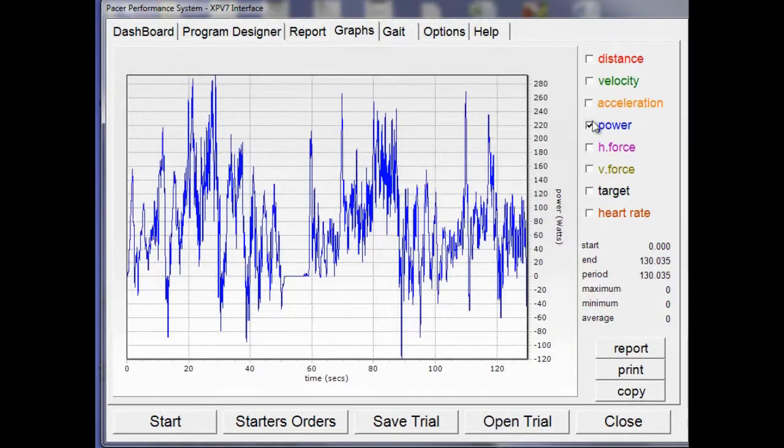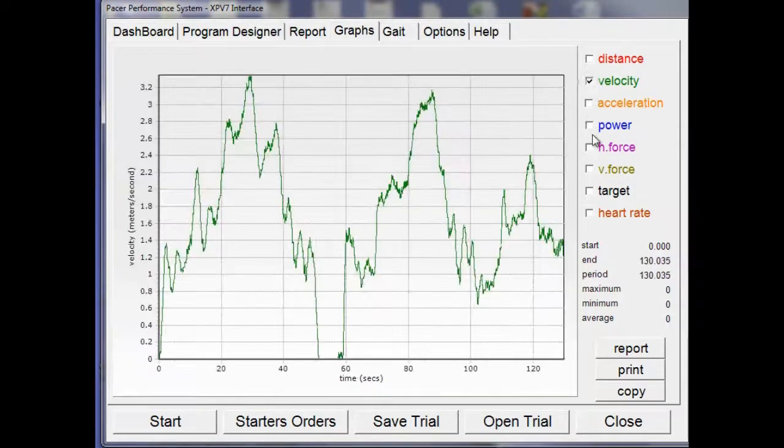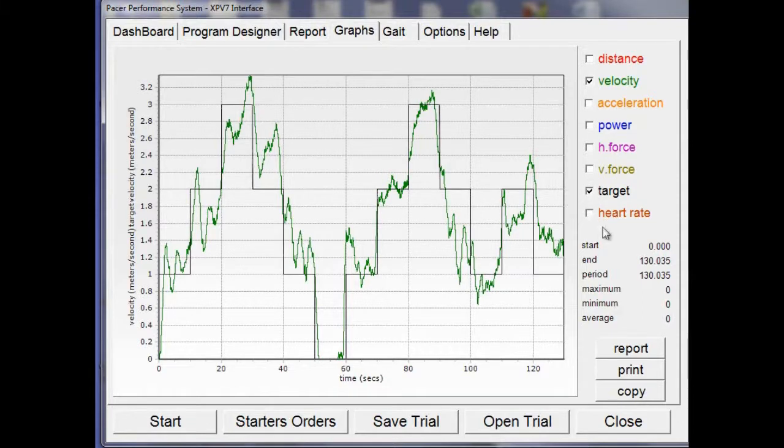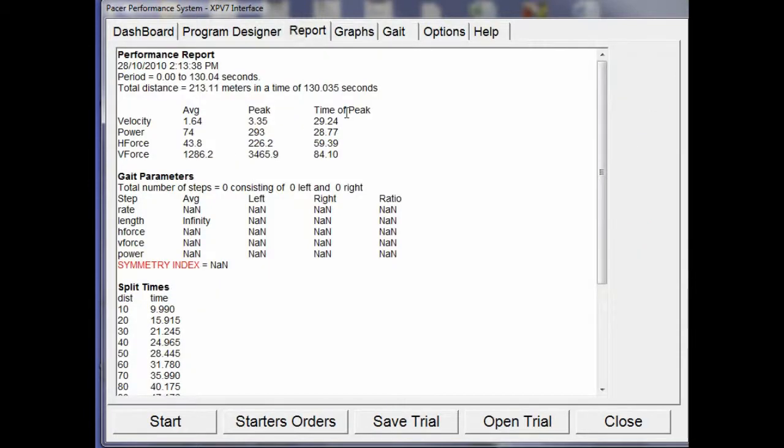And then you can select the portion of the graph to create a report. So we are just going to report for the whole session. Here you can see the report in the first section. This is taken from the graphs tab. It gives you velocity, power, horizontal force, and vertical force in average, peak, and the times of those peaks.